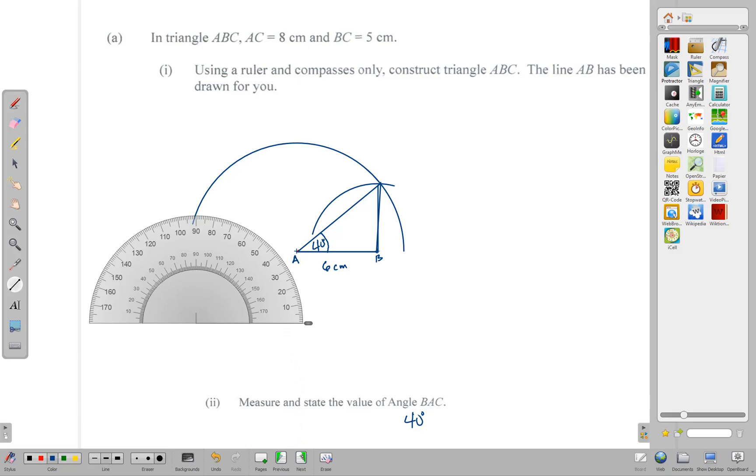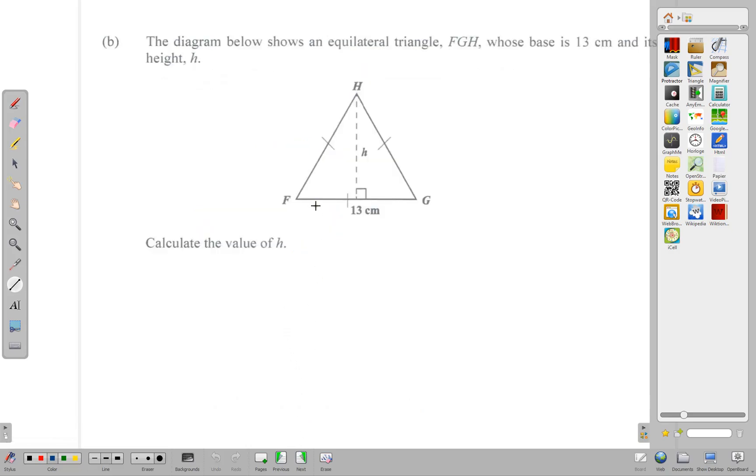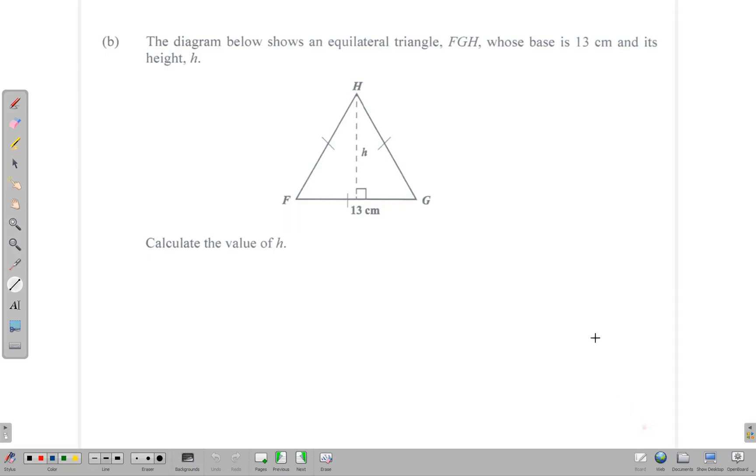Moving on to the next part of our question, we have a triangle. It says the diagram below shows an equilateral triangle FGH, and the base is 13 centimeters. Of course, since it's equilateral, then all the sides are 13 centimeters.